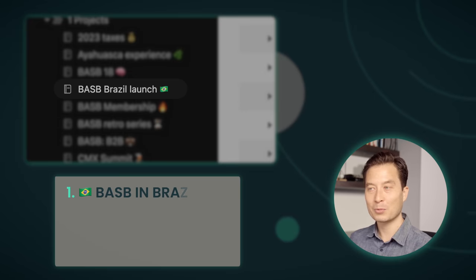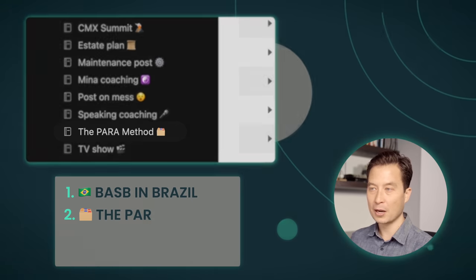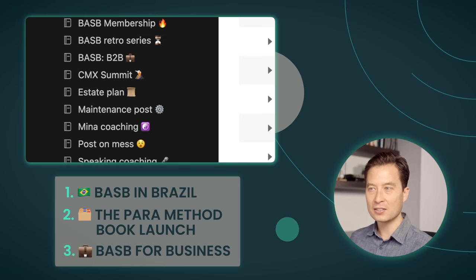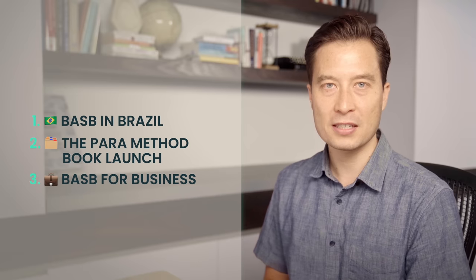And from this list of around 10 to 15 projects, I can sort of intuitively decide which ones are going to be the focus of my attention this week: the launch of my Building a Second Brain book in Brazil, the launch of the Para Method, and a B2B initiative we're doing. Three out of these dozen projects are far and away the most important and the most timely. So instead of spreading my time and my attention evenly over a dozen different projects, most of which are not important right now, I'm going to focus from this point forward only on those three projects.